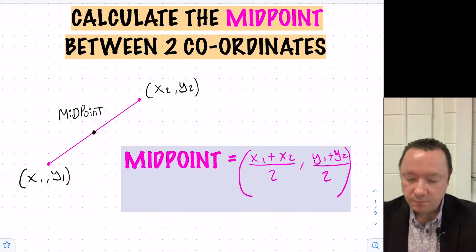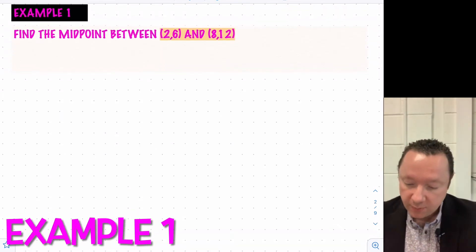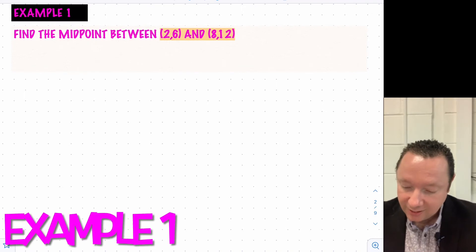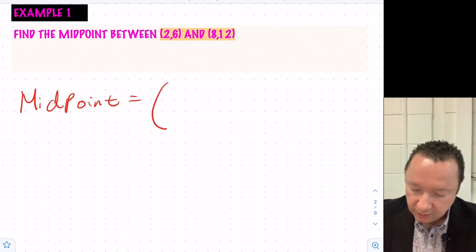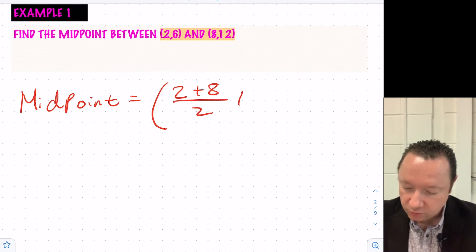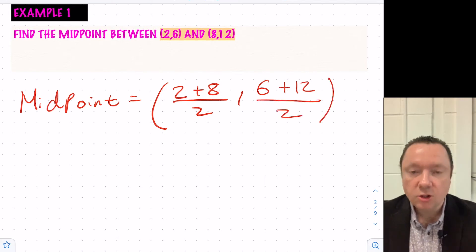Let's go into a few examples. Example 1 says, find the midpoint between 2, 6, and 8, 12. So our midpoint is simply going to be the average of the x's, 2 plus 8 divided by 2, and the average of the y's, 6 plus 12 divided by 2. So there's our starting point.